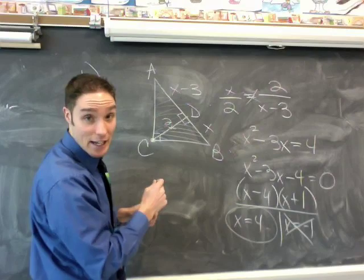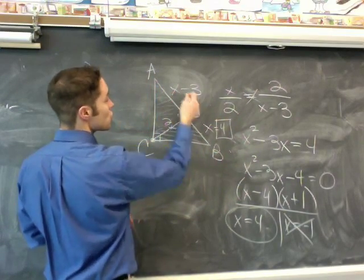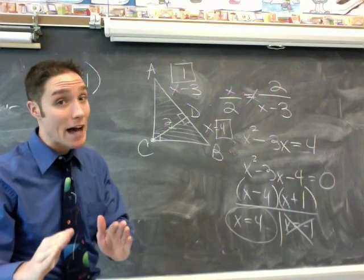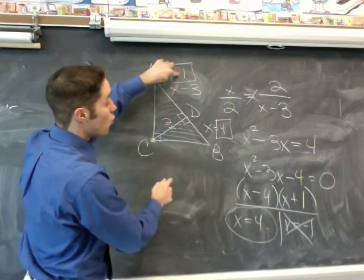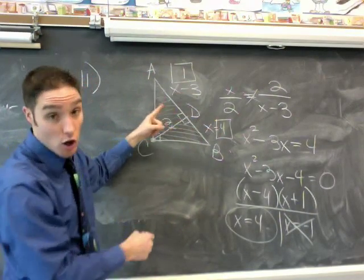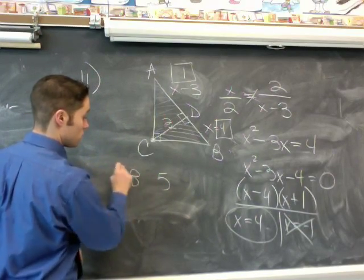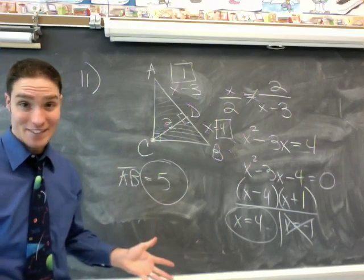So 4 is my answer. This one works. Plug it in, plug it in. X equals 4, X minus 3 is 1. So the question was asking, always go back and read the question again, it's saying how long is AB? 1 plus 4, not drawn to scale by the way, is 5. So there's my final answer. Wonderful. That's what I thought.